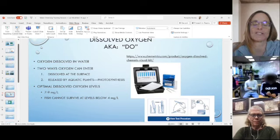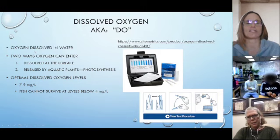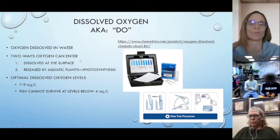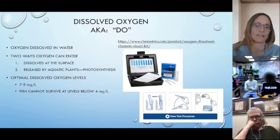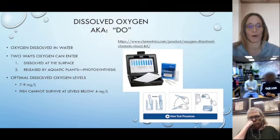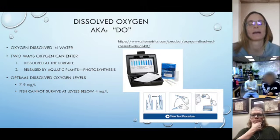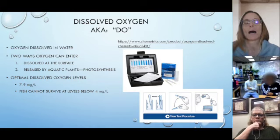Back to dissolved oxygen: two ways oxygen can enter — dissolved at the surface through wind, waves, and waterfalls, or released by aquatic plants through photosynthesis. Optimal levels of dissolved oxygen for aquatic life are somewhere around 7 to 9 milligrams per liter. Each organism has their own tolerance level, but in general most fish can't survive at levels below 4 milligrams per liter — and milligrams per liter is also parts per million.